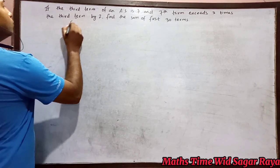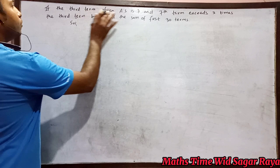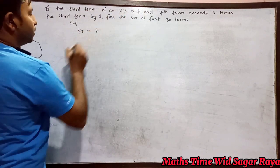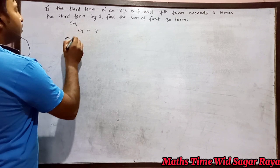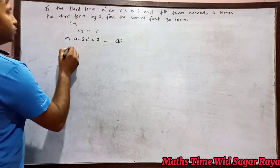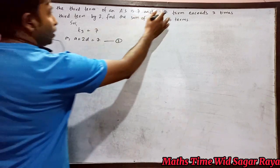Your third term of an arithmetic sequence is 7, so we can write t3 equals 7. What is the formula for t3? a plus 2d equals 7. So this is our equation 1.